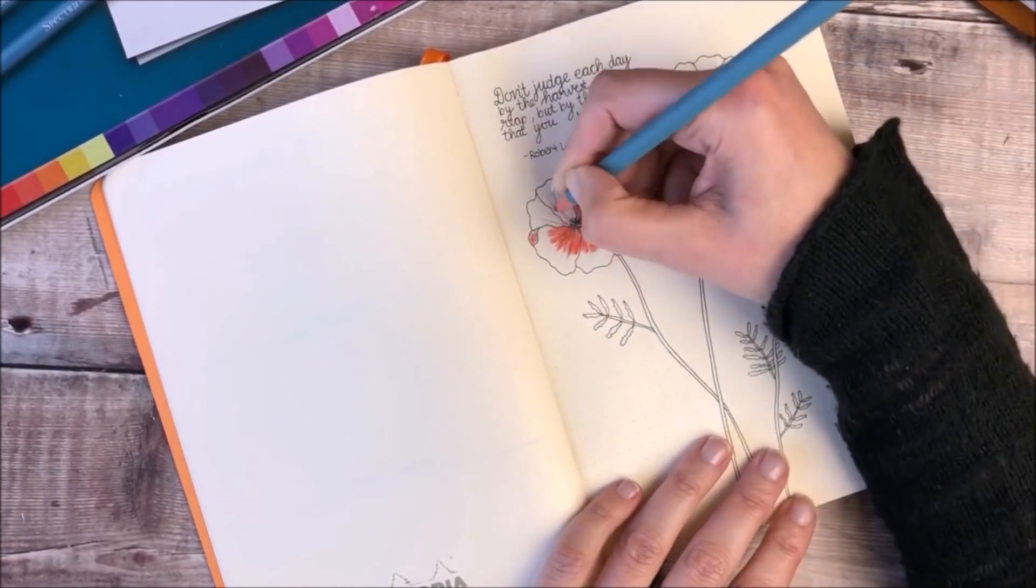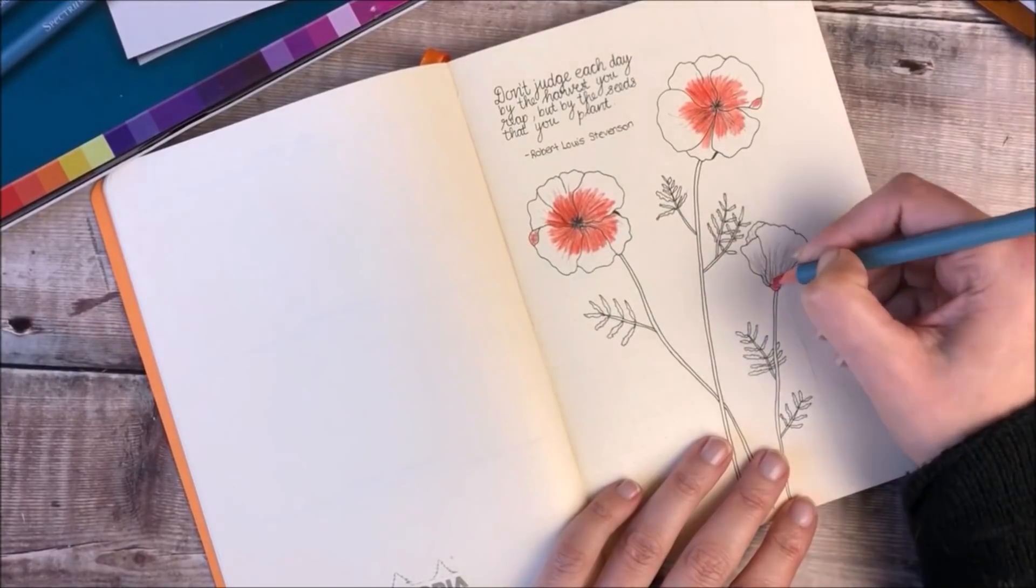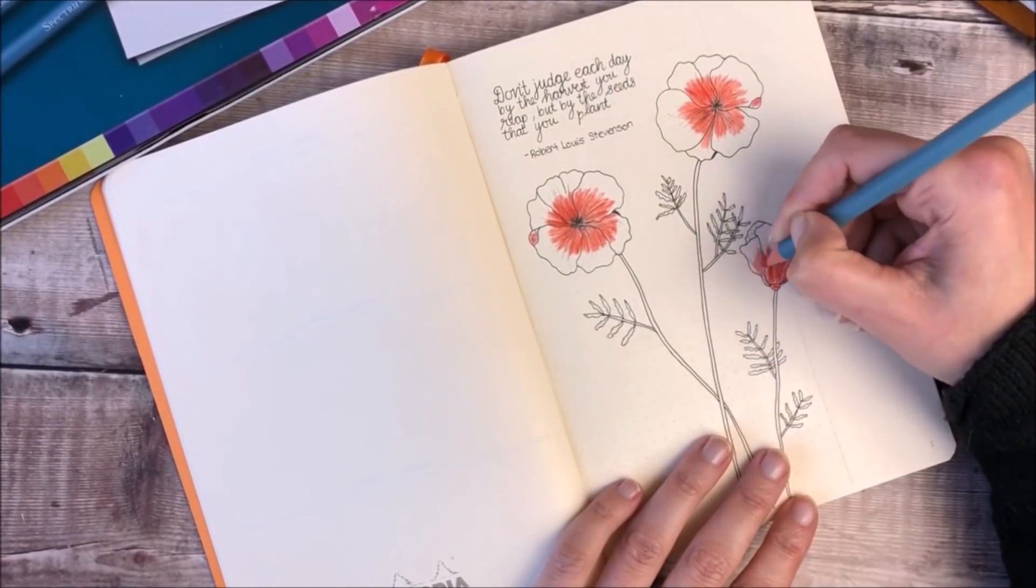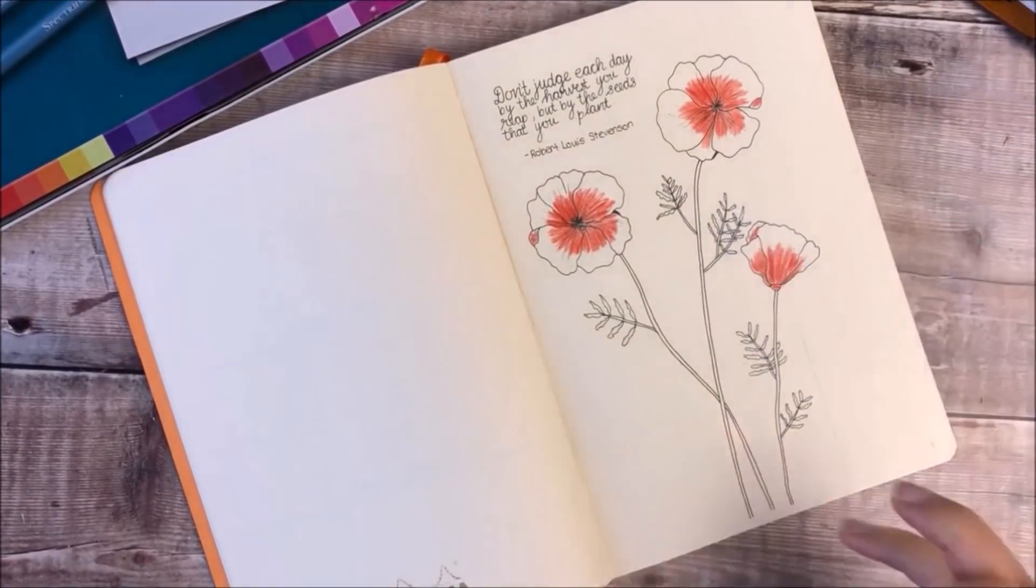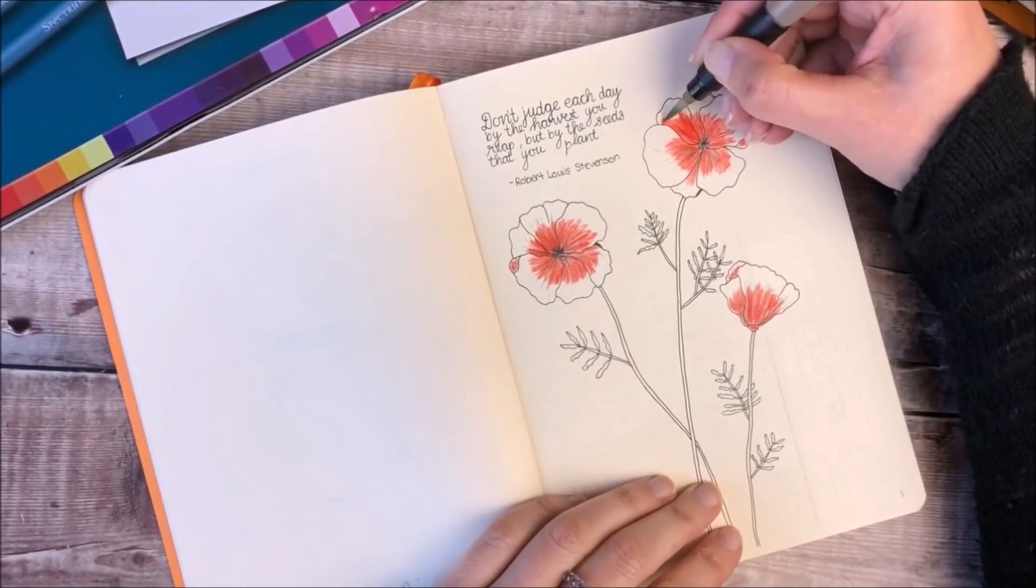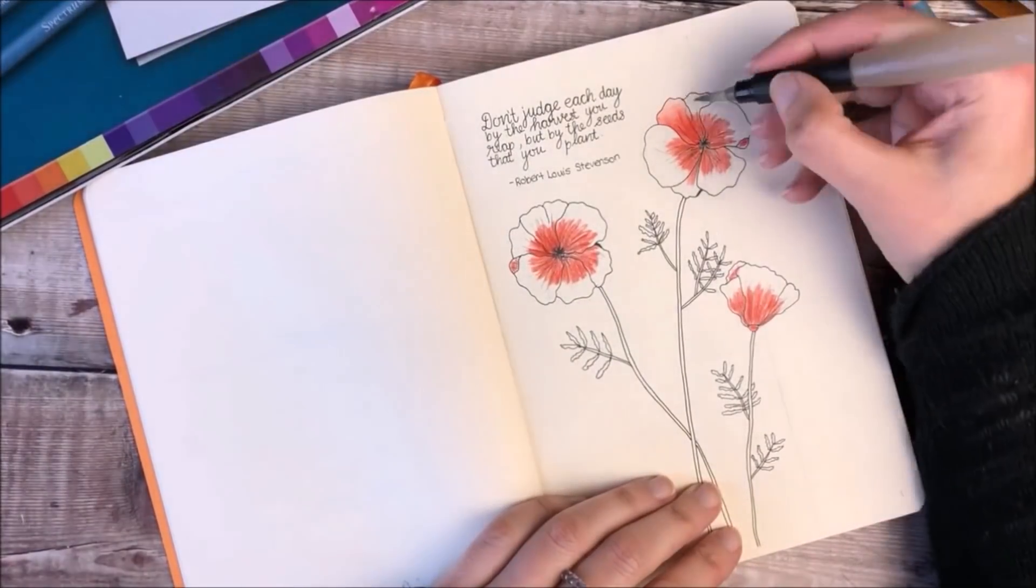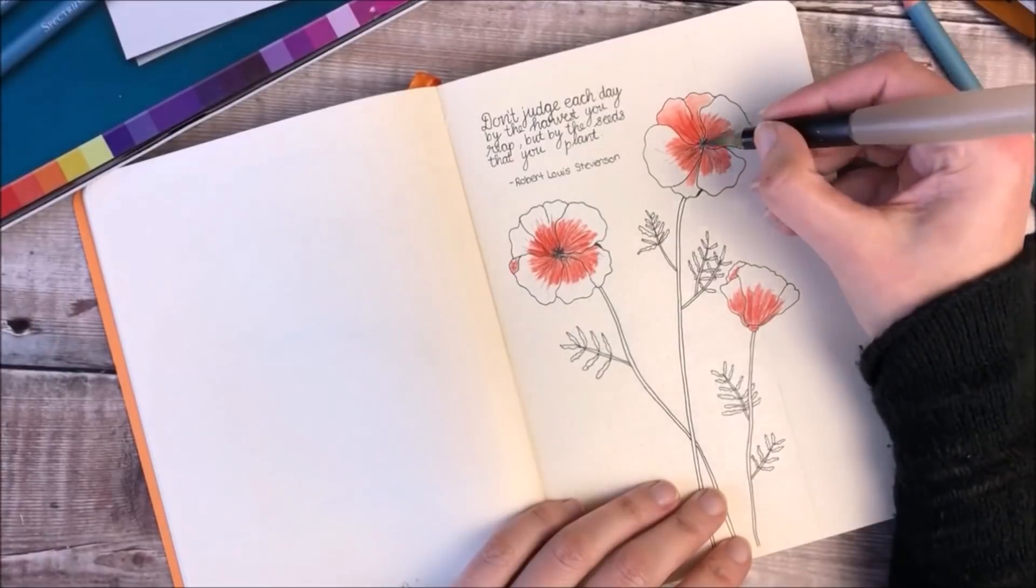I'm just adding colour to the centre of the flowers, and when I use the water I will then blend the colour out, which means that the outside part of the petals will be slightly lighter. I really liked that effect.